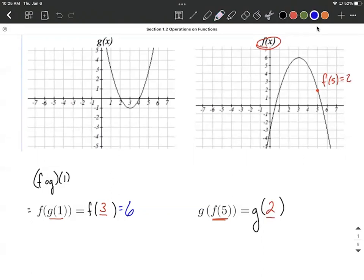To finish this up, we still need to figure out what is g of two. So g of two is going to rely on g's graph on the left hand side. When we input a two as an x value, that's going to go along with zero for a y value based on that point on the graph. So g composed with f of five is going to eventually lead us all the way down to zero.